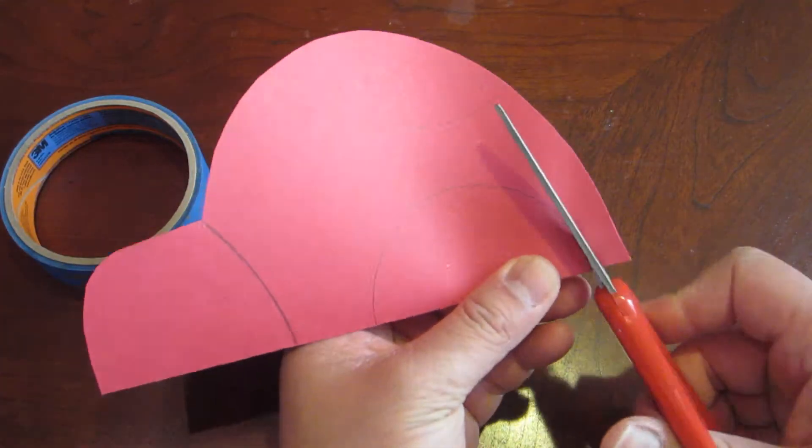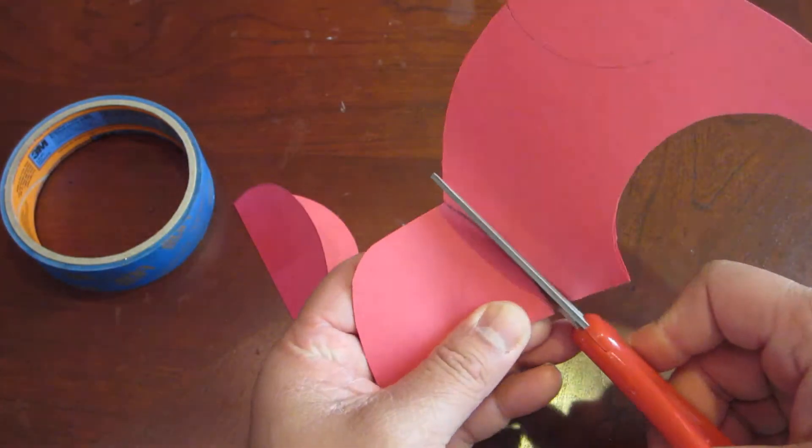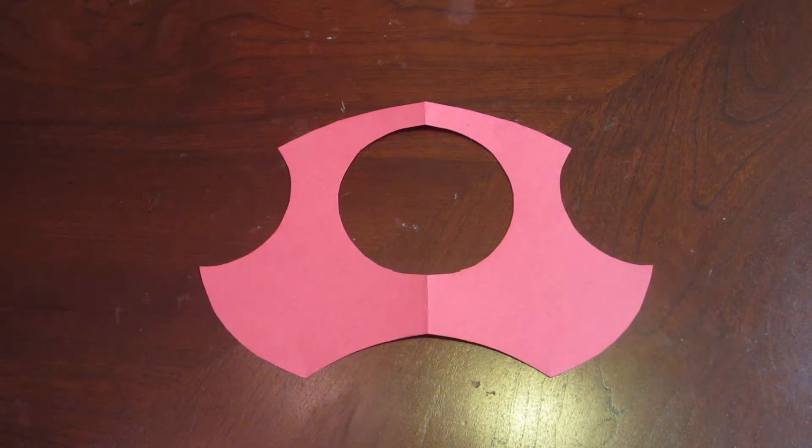Now start cutting out. Your mushroom top should look like this.